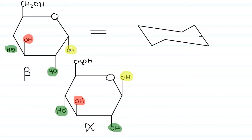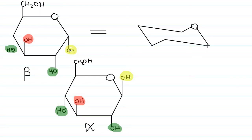Now, how to draw the axial and equatorial bonds? First, position the oxygen group — the ring oxygen comes here. Then place the carbons: this carbon, then this carbon, then this carbon, then this carbon, and finally this carbon. So in the ring structure, this is carbon number six, then five, four, three, two, one. Similarly for the second structure: five, four, three, two, one.